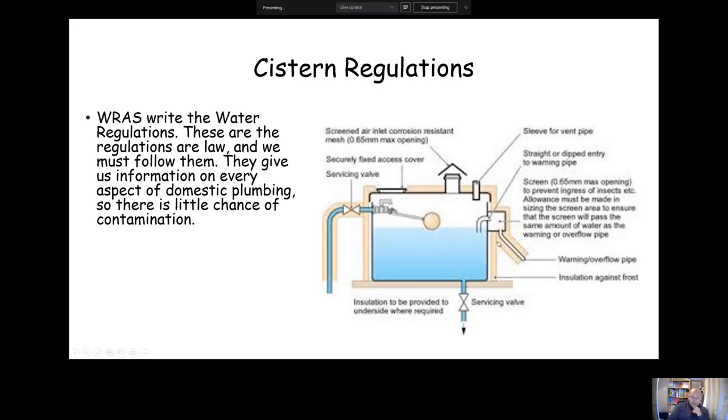We must always have a screened overflow in case the inlet control device, the float valve, fails. That would allow water to flow out of the system and stop it from overflowing and ruining your house. We'd also have an automatic means of water control, which would normally be a float operated valve. Before a float operated valve, we must always have a means of isolation, a service valve, so we can maintain the float valve if needs be. We also must have a securely fixed, tight fitting lid so we can access for cleaning and maintenance of the float valve.